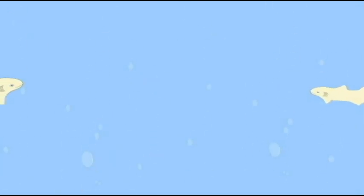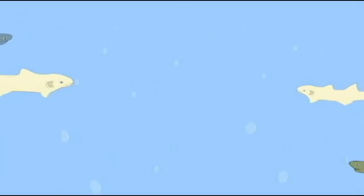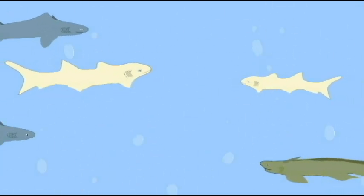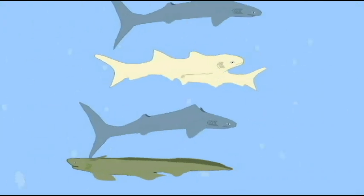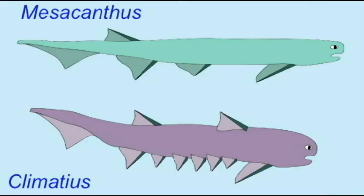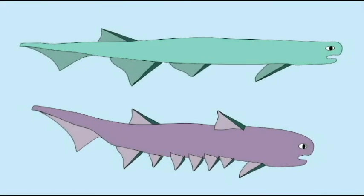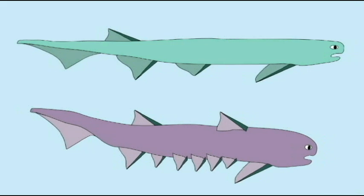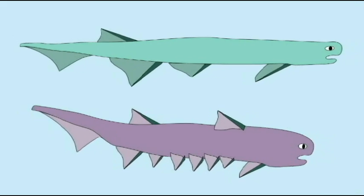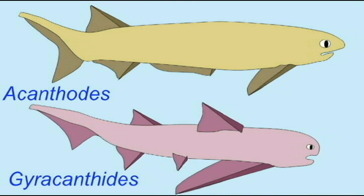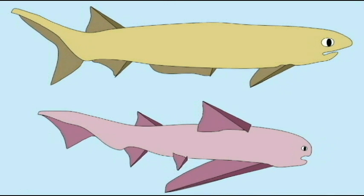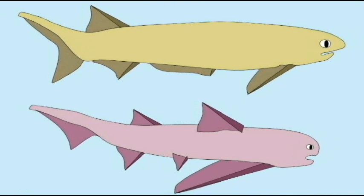The first sharks were very primitive sharks, still possessing a notochord and not having the vertebrae which modern sharks possess. The acanthodians present us with a group of fish which were transitional between cartilaginous fish and the more advanced bony fish.